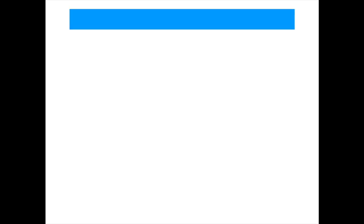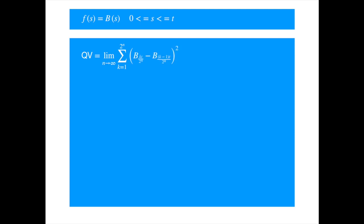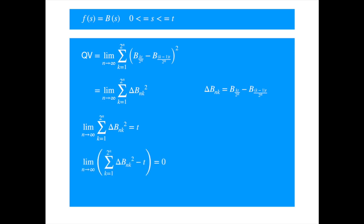So let's derive the quadratic variation of the Brownian motion. Our function is now Brownian motion over time interval from 0 to t. Let's reproduce the quadratic variation formula in terms of B. Let's denote the increment over each interval by delta B. So the quadratic variation formula becomes. We are now going to show that as n becomes large, the quadratic variation over the entire interval becomes equal to the length of the interval. Moving t to the left-hand side, we need to show the limit of s goes to 0 almost surely as n becomes large.